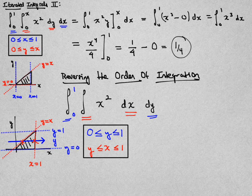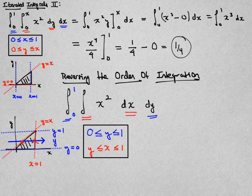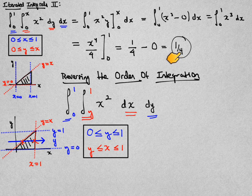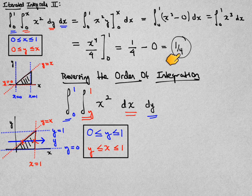My x limits of integration should vary from x equal to y to x equal to 1. We now have another integral that we can calculate. We know the answer. It should agree with 1 fourth if we've done everything correctly.